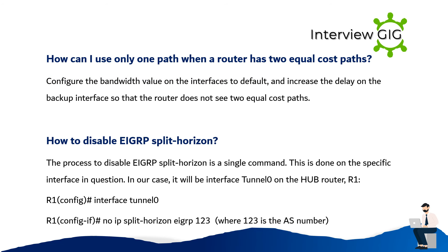How can I use only one path when a router has two equal-cost paths? Configure the bandwidth value on the interfaces to default, and increase the delay on the backup interface so that the router does not see two equal-cost paths.